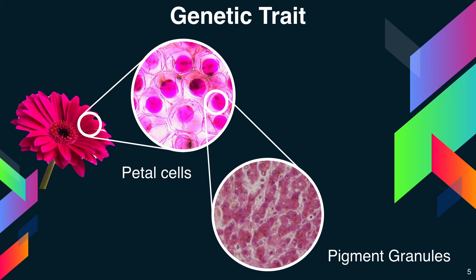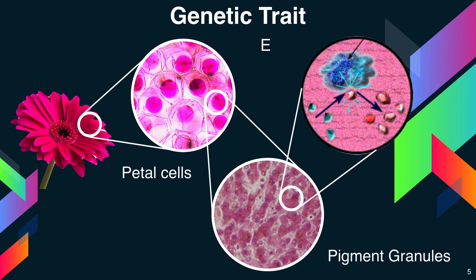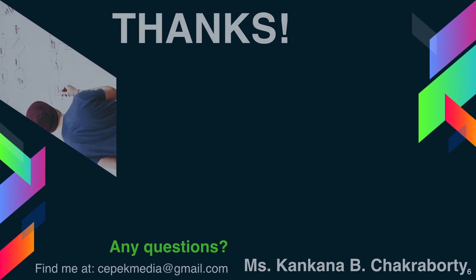It can be seen with a microscope with great magnification that the petal cells are packed with pigment granules, but the observer cannot see from where these granules are coming from.